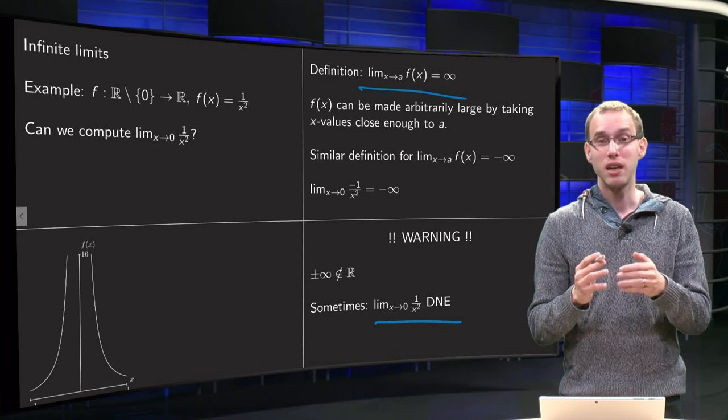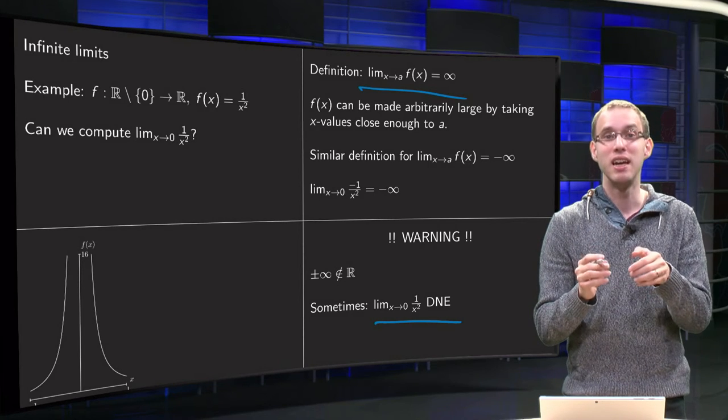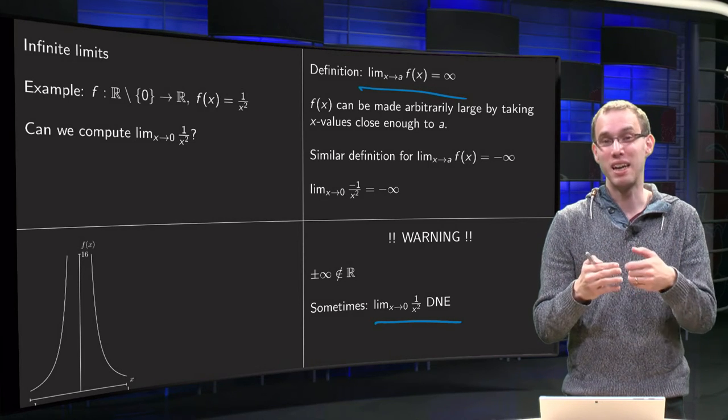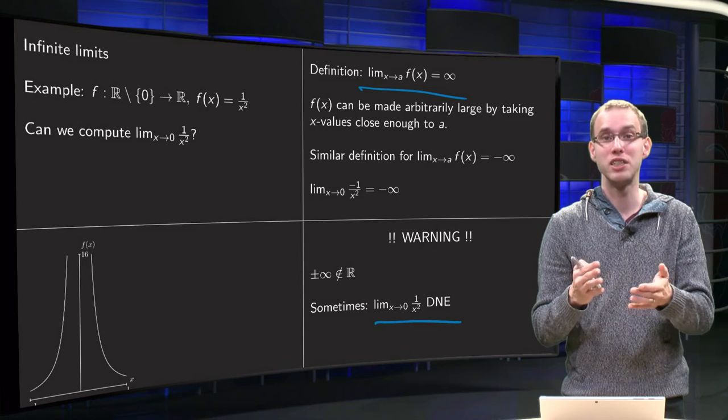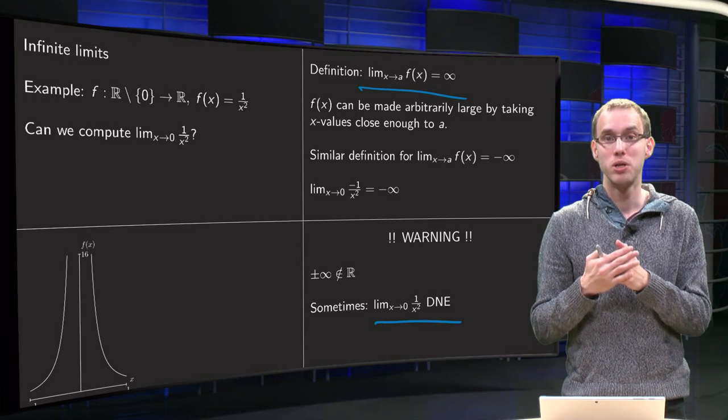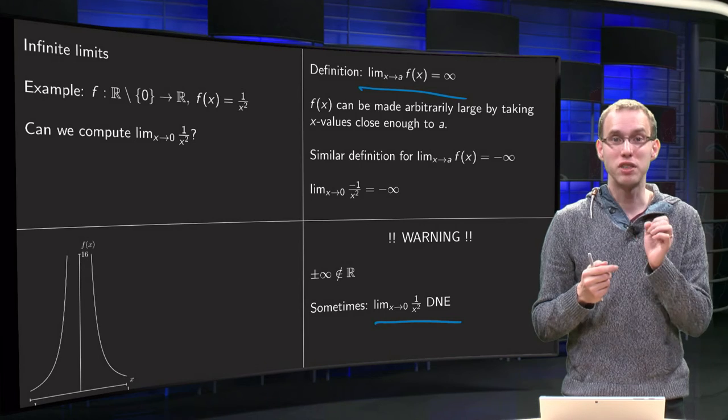Where we say, well, alpha of x limit equals infinity, that means that we can alpha of x arbitrarily large by taking x arbitrarily close to a. So, that is what it means.